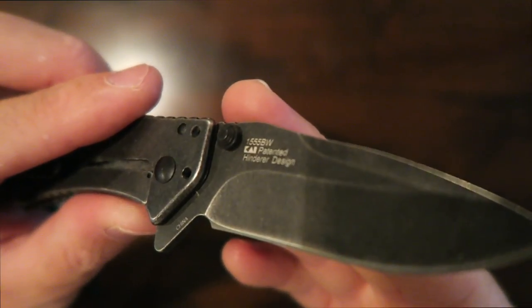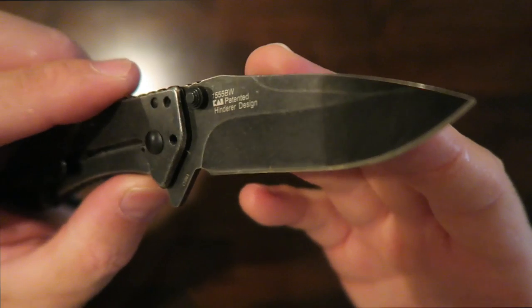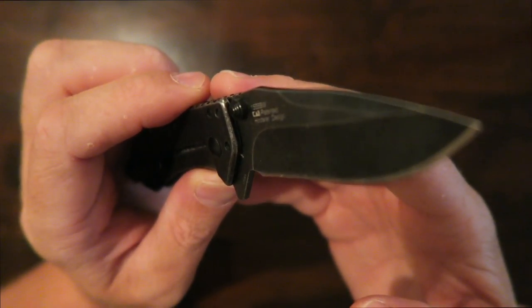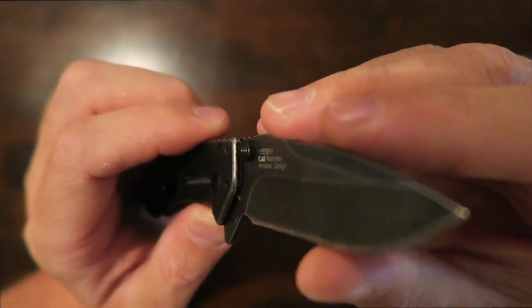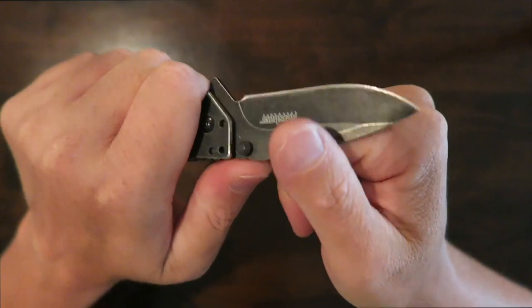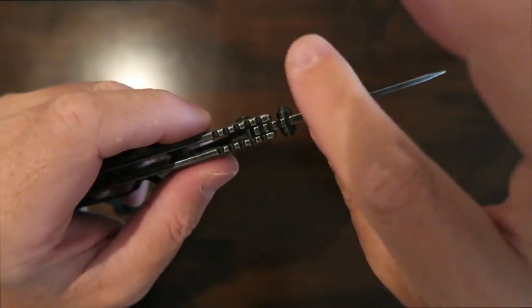Very sharp blade. You can see Hinderer design there. Black wash finish on the blade. Again with the 8CR13MOV steel. This one weighs in at 4.1 ounces so it's pretty light. Lighter than the others that I've shown. Dual thumb studs there.